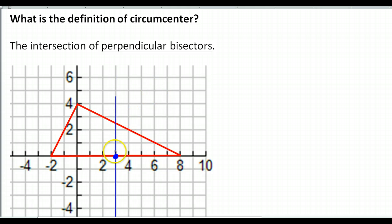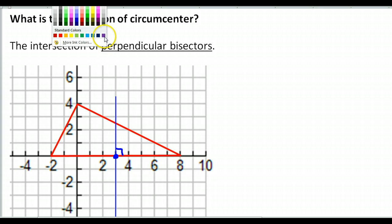I'll go ahead and put a little box here to remind us that that is perpendicular. All we need really is one more perpendicular bisector, and that will show us wherever they meet — that's going to be the circumcenter. It really doesn't matter which side I use. I think I'll wind up doing both sides just for practice to show you how it's done.